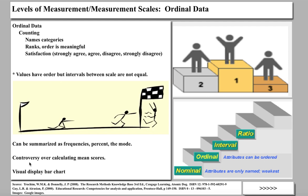There is some controversy among statisticians about calculating a mean score from a survey question that uses ordinal data, and this controversy has gone on for quite a while. If you come across research that does that, interpret it with a little bit of caution. The general consensus is that it is legitimate to calculate mean scores using ordinal data. Visually, ordinal data is usually displayed in bar charts, frequencies, and percents.